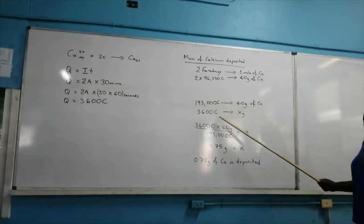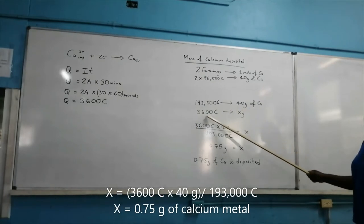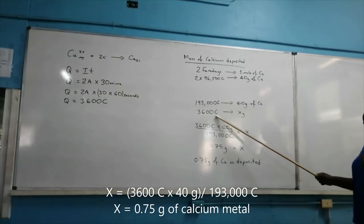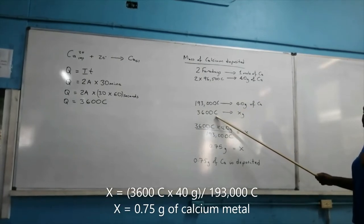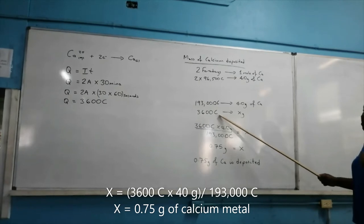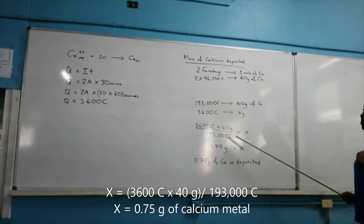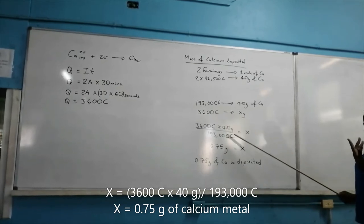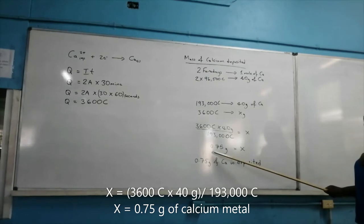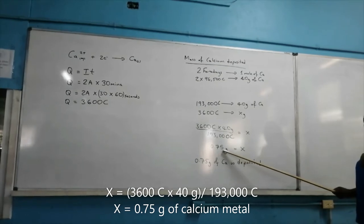In the experiment, 3600 coulombs of charge flow through the circuit. So the mass of calcium deposited can be found by cross multiplication, and that would equate to 0.75 grams.